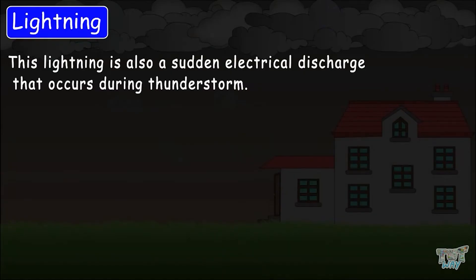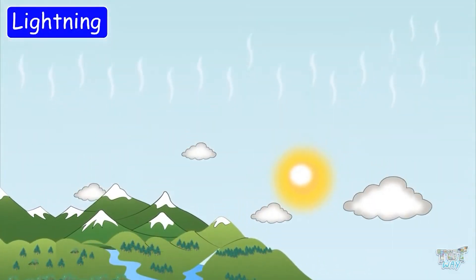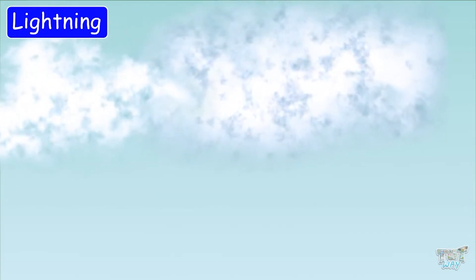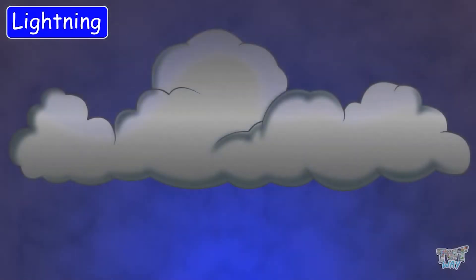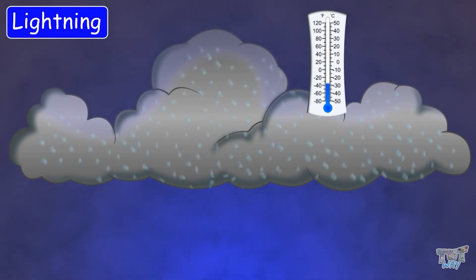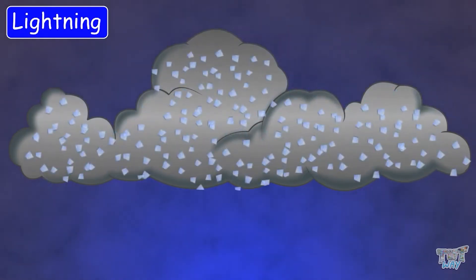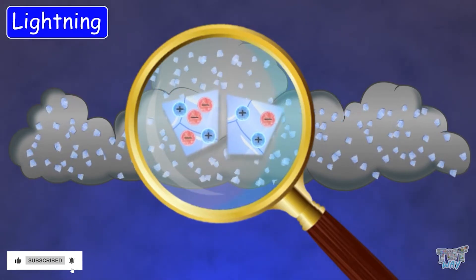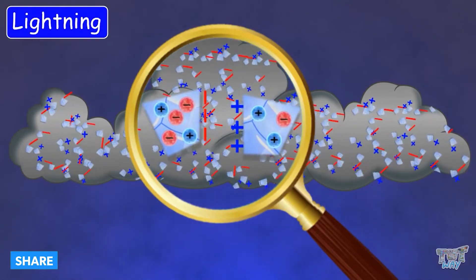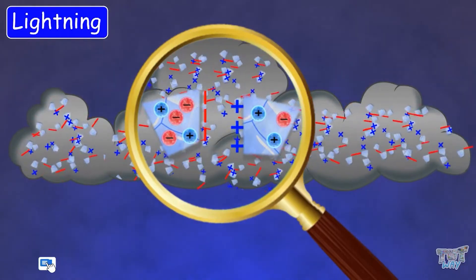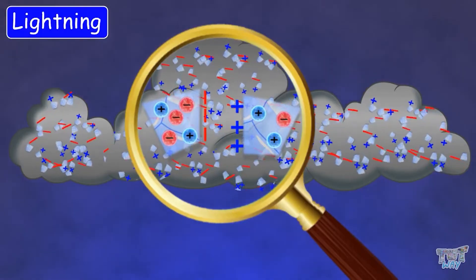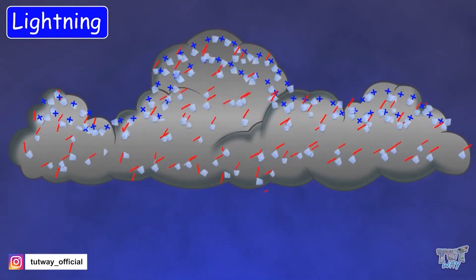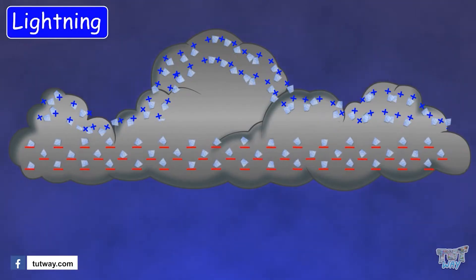Let's try to understand this phenomenon. Evaporation of water results in the rising of water vapor into the air and the formation of clouds. The clouds keep growing in size, and the top of the clouds have temperatures even below freezing point, and water vapor turns into small bits of ice. These bits of ice continuously collide with each other, which leads to the transfer of electrons and builds a lot of positive and negative charges in the clouds. Lighter positively charged particles remain at the top of the clouds and heavier negatively charged particles sink to the bottom of the cloud.